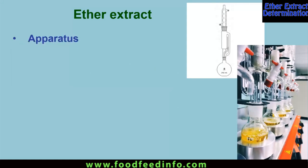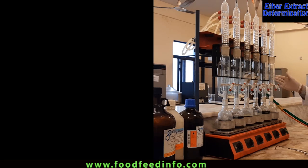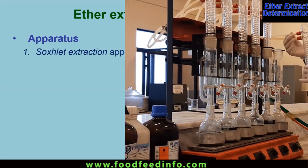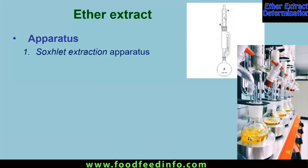The apparatus required for ether extraction is the Soxhlet extraction apparatus, which has three components. The topmost is known as the condenser, the second is known as the sample jacket or extraction chamber, and the third — the lowest one — is the flask where the ether is collected. The condenser helps to condense the ether. We place ether in the flask, which is placed on a heater or heating mantle. Due to heating, the ether gets volatilized.